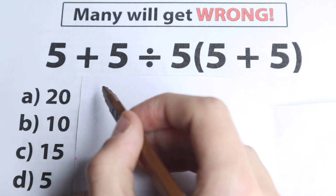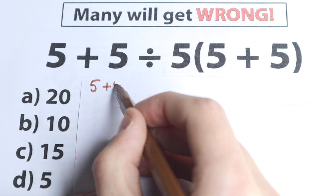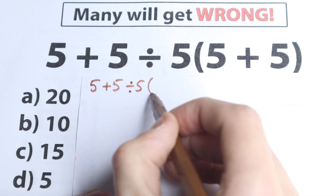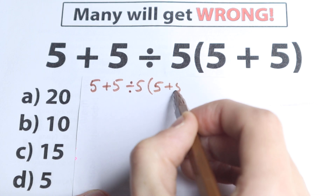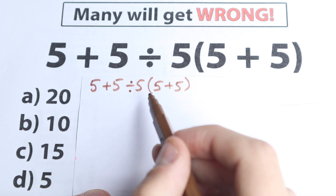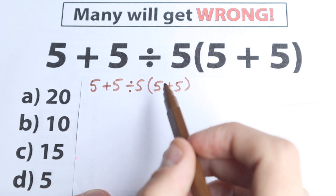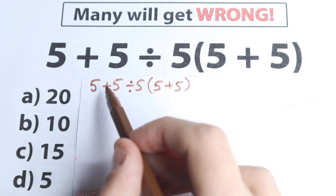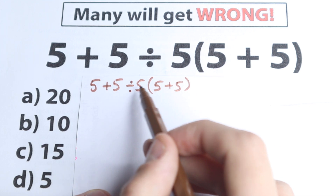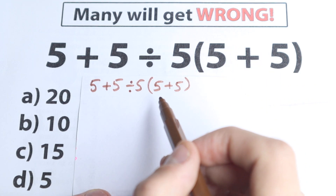So I want to start solving this. Right here we have 5 plus 5 divided by 5, and times 5 plus 5 in parentheses. One part of students thinks: I learned this stuff in the third grade, I know about addition, division, multiplication, so I can easily handle this question.